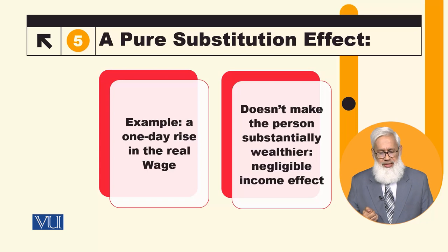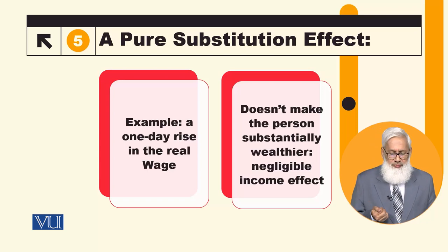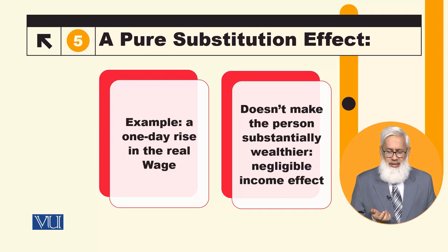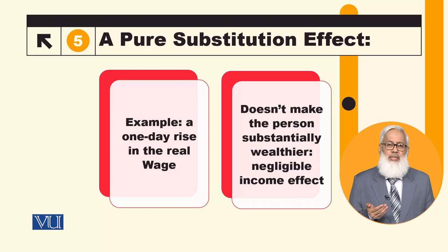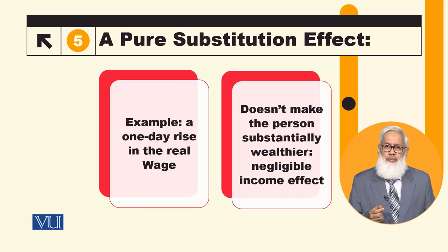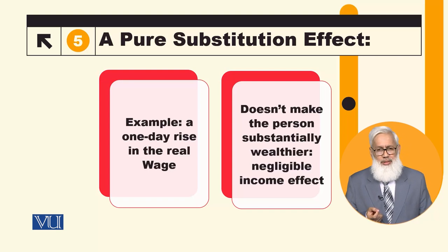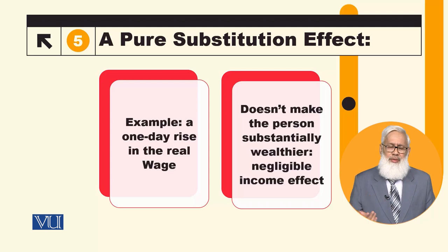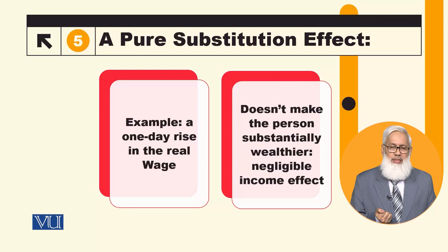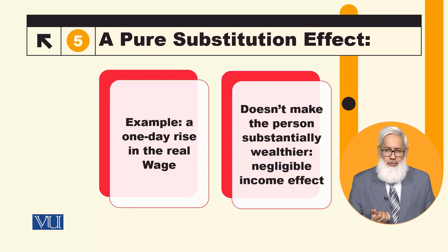For example, consider the pure substitution effect. Suppose the wage increase is very temporary — only a one-day increase. This one-day increase can have an impact. But the income effect is very much negligible. Therefore, the income increase compared to the worker's lifetime income will not have a special effect. This is why we say that a one-day increase in the real wage is a case of pure substitution effect.